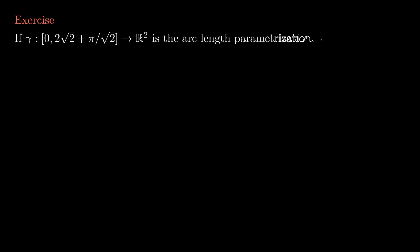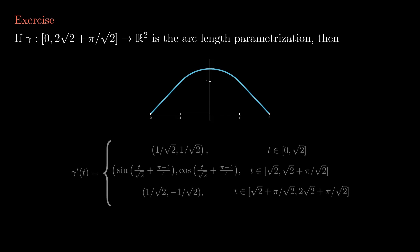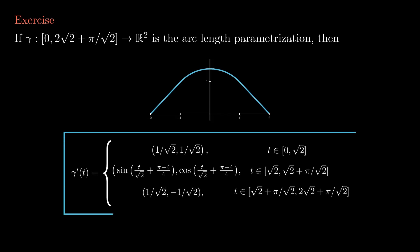A last exercise for you today is to show that this curve I mentioned last lesson is not smooth regular. This curve consists of a straight line going from minus 2, 0 to minus 1, 1, followed by a piece of circle from minus 1, 1 to 1, 1, and then another straight segment from 1, 1 to 2, 0. If this curve was smooth regular, its arc length parametrization would be smooth. However, you can compute the derivative of the arc length parametrization and show that it is not smooth. Good luck and see you next time!